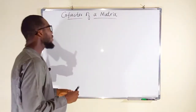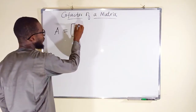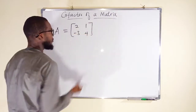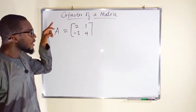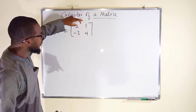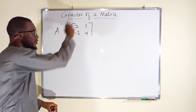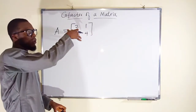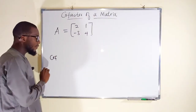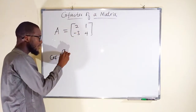So let's begin. Suppose we have a matrix A with entries 2, negative 3, 1, and 4. Remember, each element in this matrix has its own cofactor, so we are going to find the cofactor of each individual element. We have the first row, first column element denoted by A11.